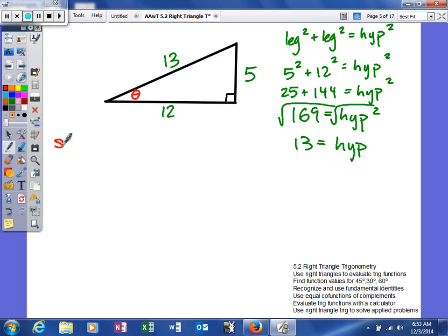There are six trig functions. We'll find the sine of our angle, the cosine, the tangent, and then the cosecant, the secant, and the cotangent.